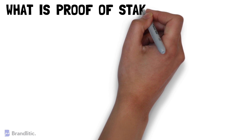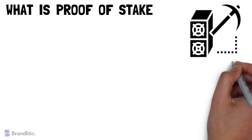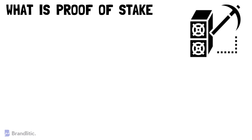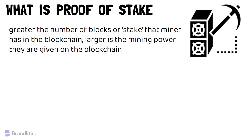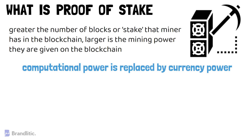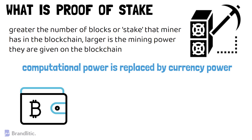Next, let's talk about Proof-of-Stake. Proof-of-Stake means that an individual who wishes to mine or validate a transaction on the blockchain can do so depending on how many blocks they already hold. The greater the number of blocks or stakes that a miner has in the blockchain, the larger the mining power they are given. In Proof-of-Stake, computational power is replaced by currency power, and an actor's influence depends on the number of tokens a node has in its wallet.